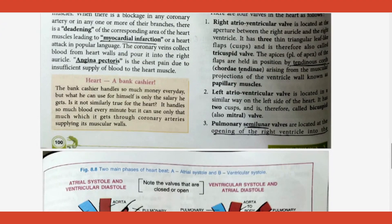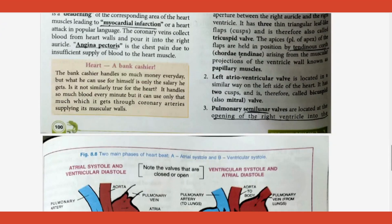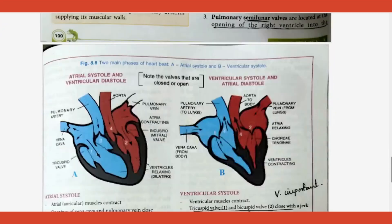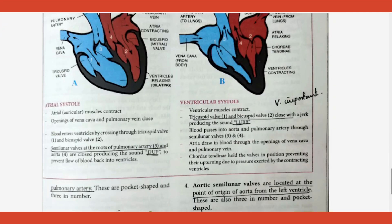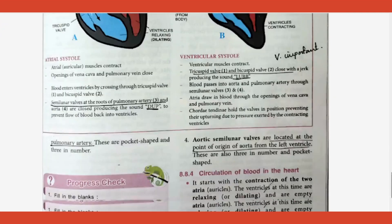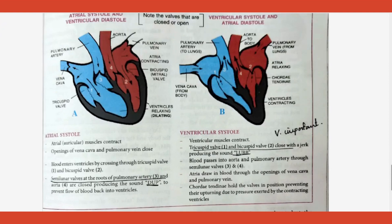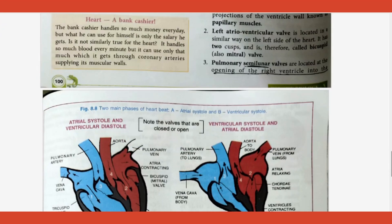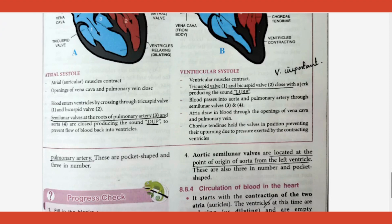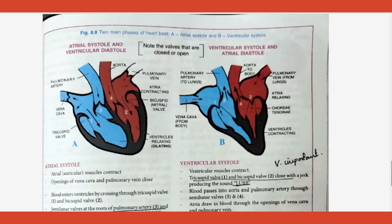The exact location of the pulmonary semilunar valve has been asked in exams, as has the aortic semilunar valve. Please note down the exact location of the pulmonary semilunar valve, the aortic semilunar valve, and the tricuspid and bicuspid valves — all of these need to be learned.